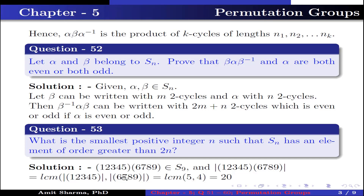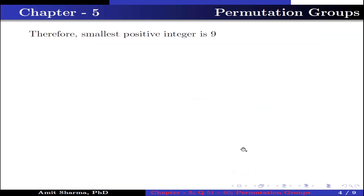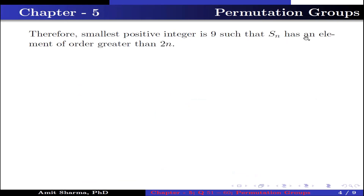(1 2 3 4 5) is a 5-cycle and (6 7 8 9) is a 4-cycle, so the lcm of 5 and 4 equals 20, which is greater than 2n = 18. Therefore the smallest positive integer is n = 9 such that Sn has an element of order greater than 2n.